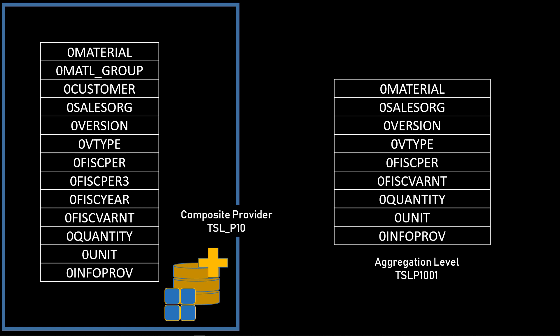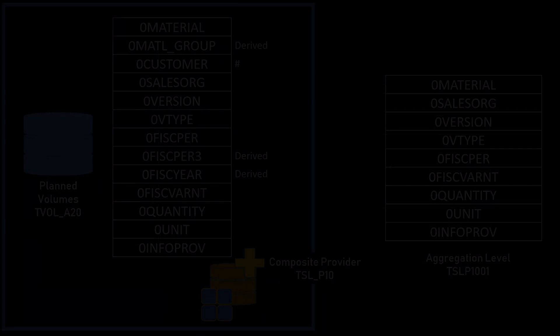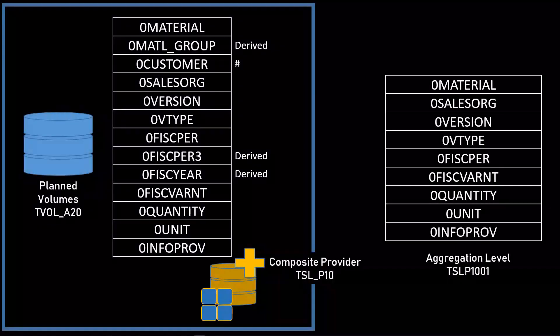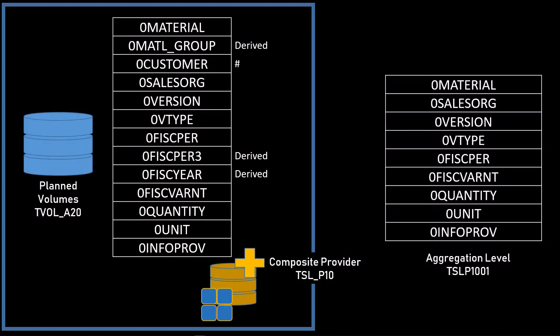The aggregation level allows us to meet this goal. The aggregation level is a subset of the characteristics of our info provider, which is either an ADSO or a composite provider, that we want to plan on.